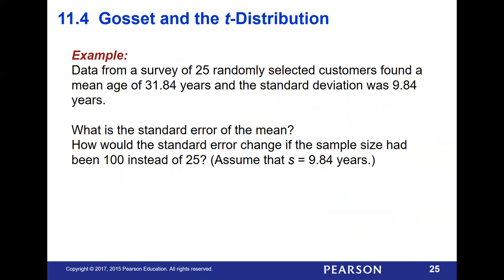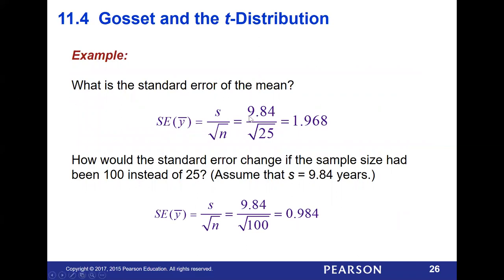Example: a survey of 25 randomly selected customers gives a mean age of 31.84 years and a standard deviation of 9.84 years. What is the standard error of the mean? We take that 9.84 standard deviation divided by the square root of 25, giving a standard error of 1.968. If the sample size had been 100 instead, the standard error would be 0.984 — quite a bit smaller. The larger your sample size gets, the smaller your standard error becomes.